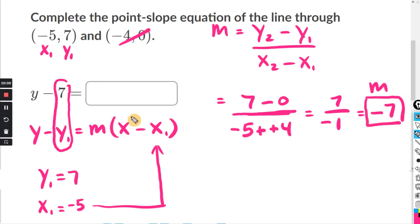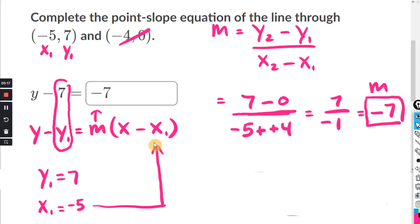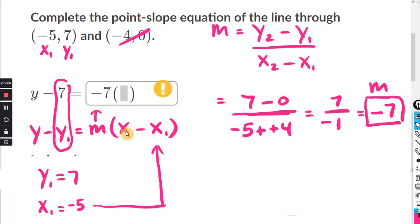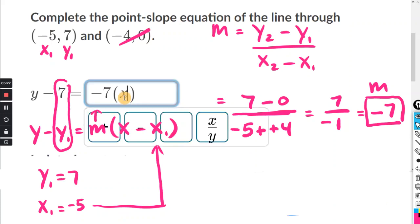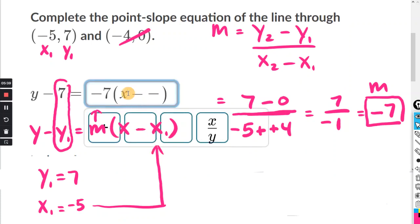In place of m, I'm going to put negative 7. So just type negative 7. And then you want to type the parentheses. Type the x inside the parentheses. And then do minus x1. They said x1 is negative 5. So it's going to be minus negative 5 inside the parentheses. Minus negative 5.